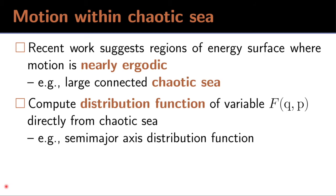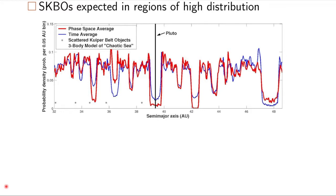And we can compute a distribution function of some variable of interest. For example, the semi-major axis. For the energy shells that correspond to the scattered Kuiper Belt objects, I've shown a phase space average in red and a time average in blue. These are very close, which means we've got a nearly ergodic situation.